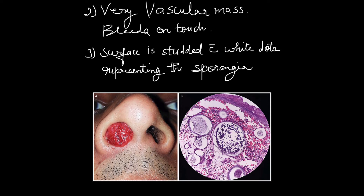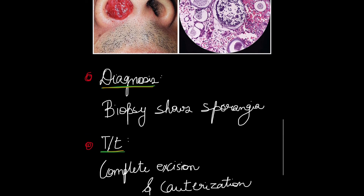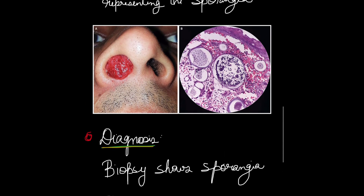The surface is studded with white dots which represent the sporangia. The picture shown here is of the rhinosporidiosis patient and it shows the mass in the nose. The second picture is of the histopathological slide which shows the sporangia fully packed with immature sporoblasts.